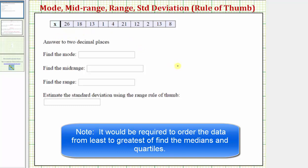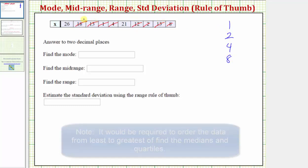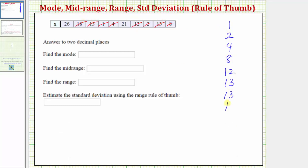So starting with the least values or smallest values, we'd have 1, 2, 4, 8, followed by 12, 13, 13, 18, and finally 21 and 26.